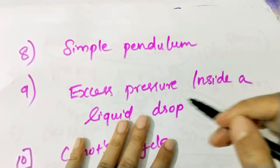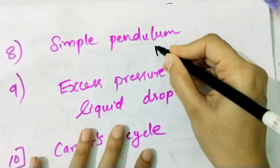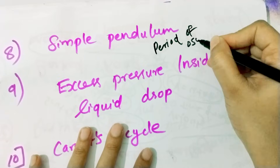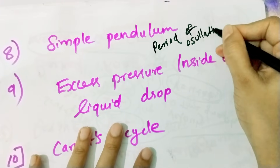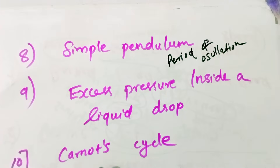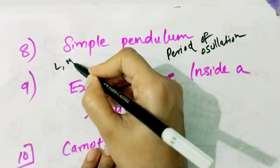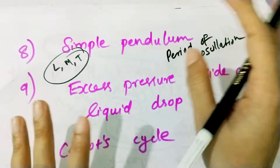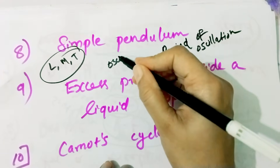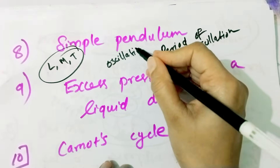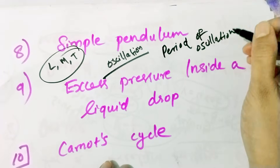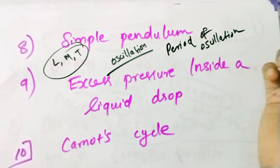Next is the simple pendulum: Derive an Expression for the Period of Oscillation of a Simple Pendulum. This is also called Dimensional Analysis. You can look at the dimensions L, M, T, the oscillations, and the derivation. Derive the period of oscillation of a simple pendulum.